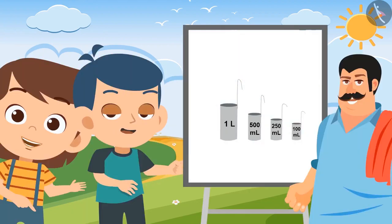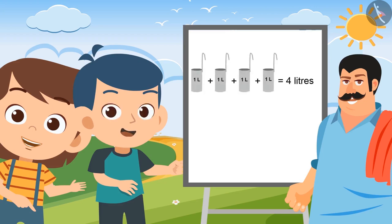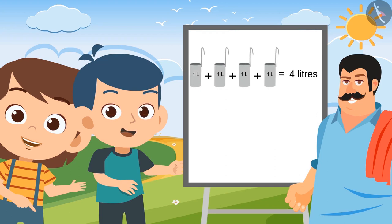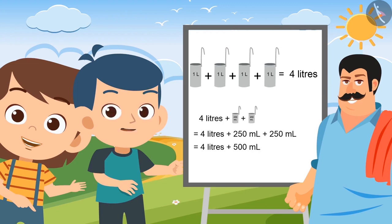Brother, which vessel will you use to give 4 and a half litres of milk? I will use the 1 litre container 4 times to measure 4 litres of milk, and the 500 ml container to measure the remaining half a litre. Let me tell you another way — you can also measure 4 litres using the 1 litre container 4 times and the 250 ml container 2 times. Yes, this can also be done.